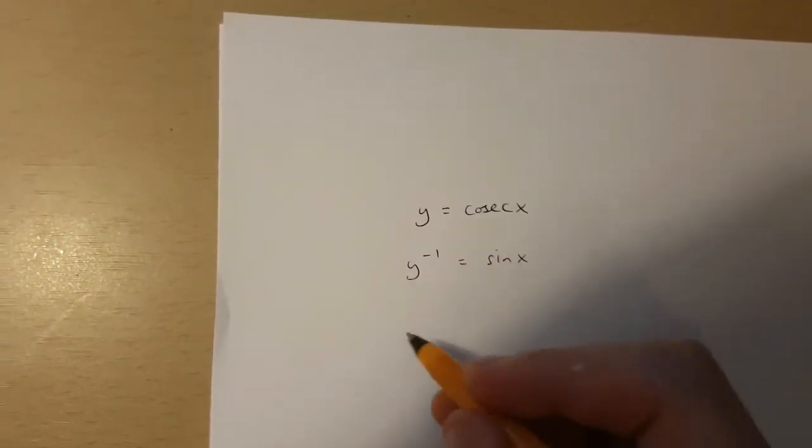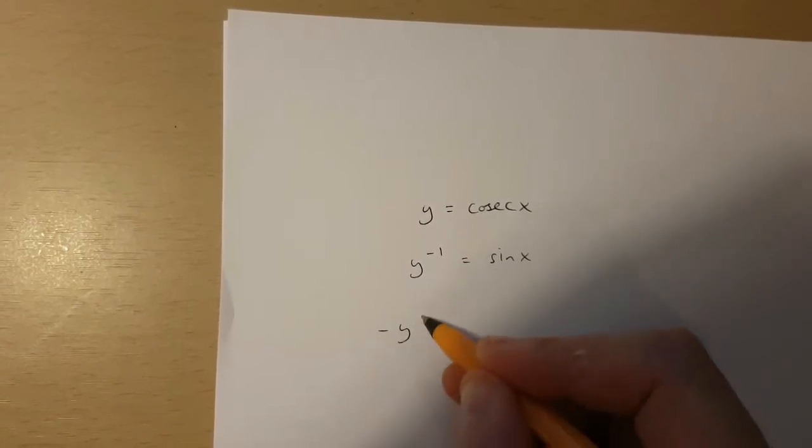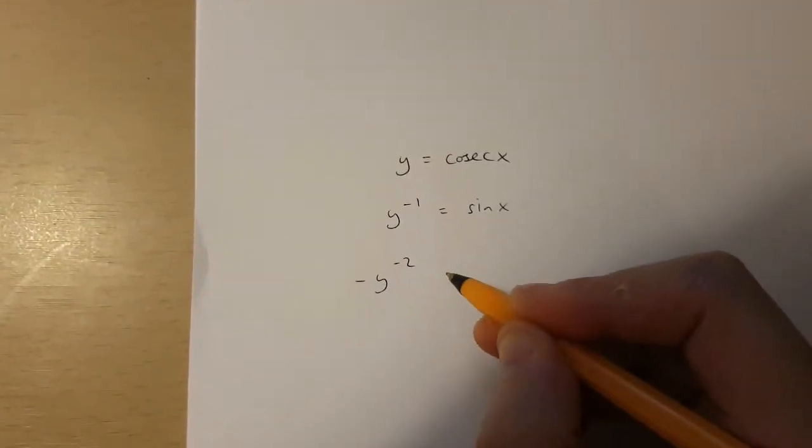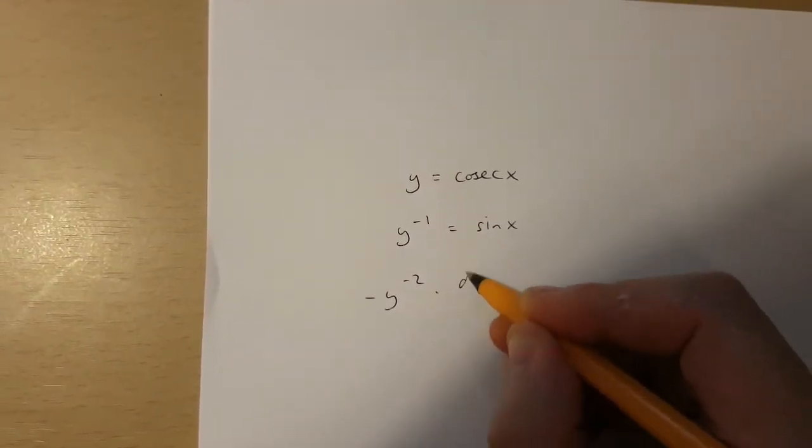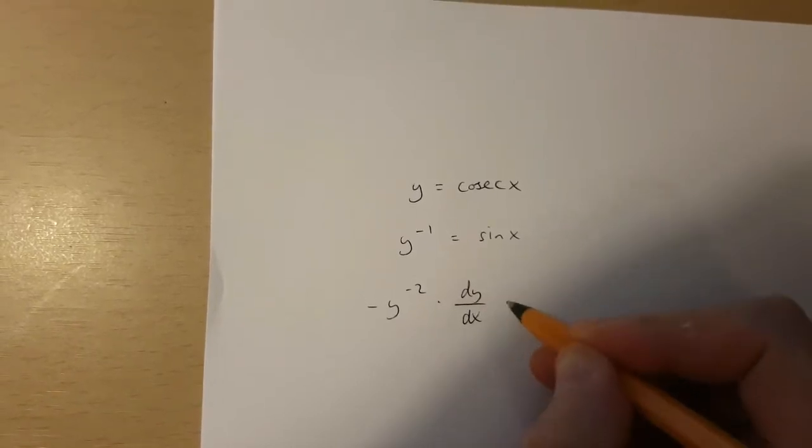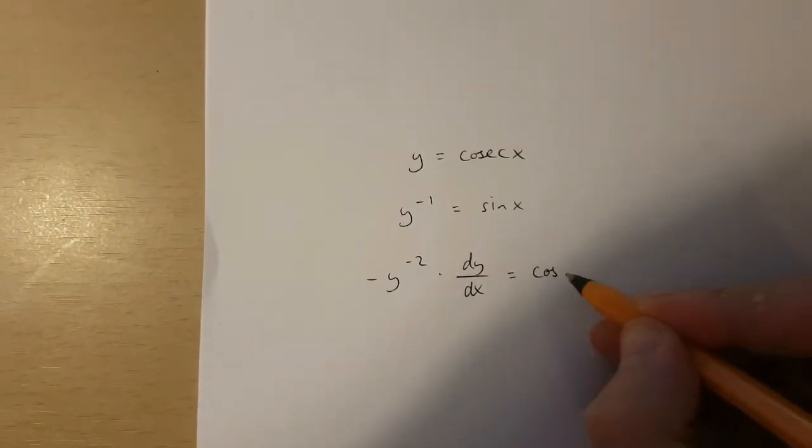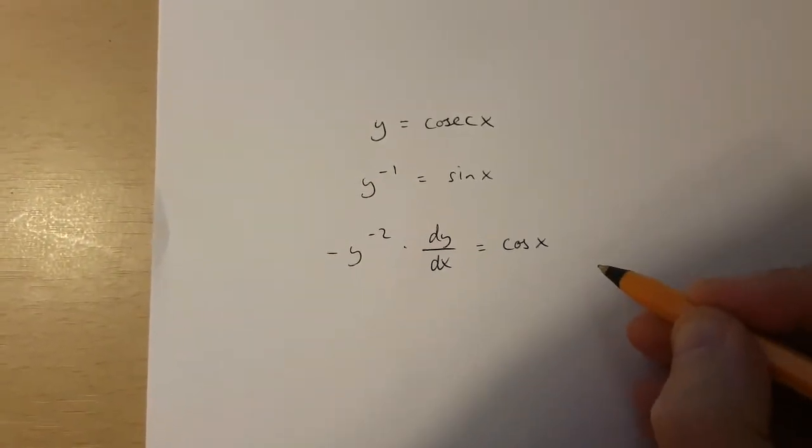Now if I use implicit differentiation here, I'm going to get minus y to the power of minus 2 times dy over dx is equal to cos x.